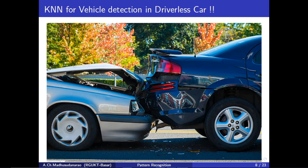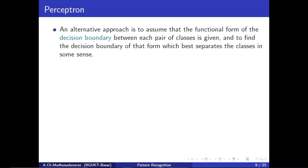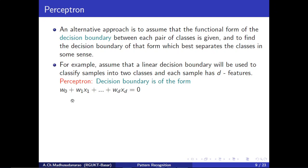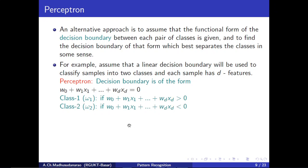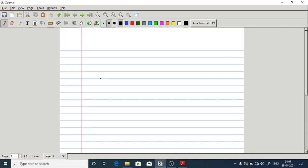In order to avoid such timing problems during test time, we will try to go for some functional form for decision boundaries. For example, consider a linear decision boundary: w0 + w1*x1 + ... + wd*xd = 0. If the result is greater than 0, that is class 1; if less than 0, that is class 2. When the decision boundary is linear like this, it is called a perceptron.